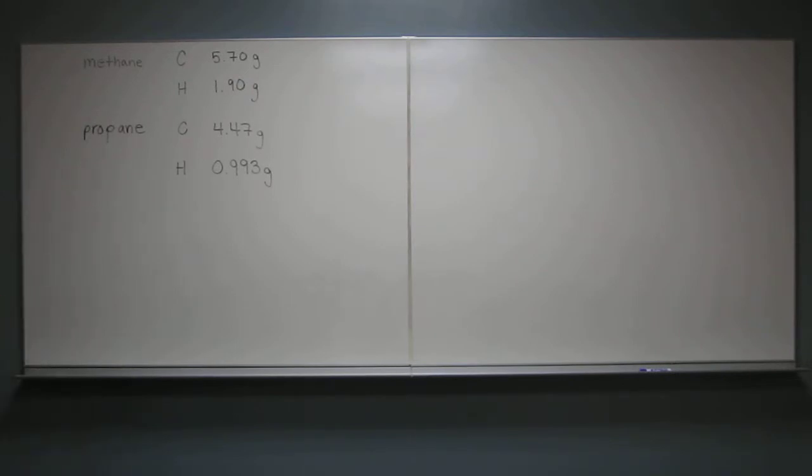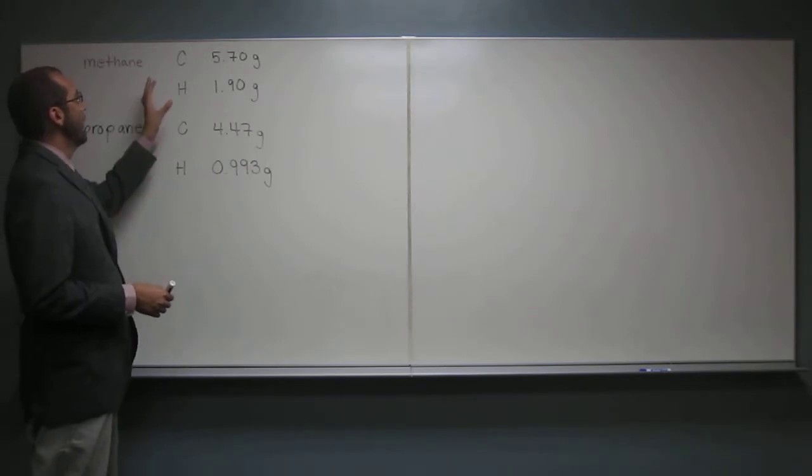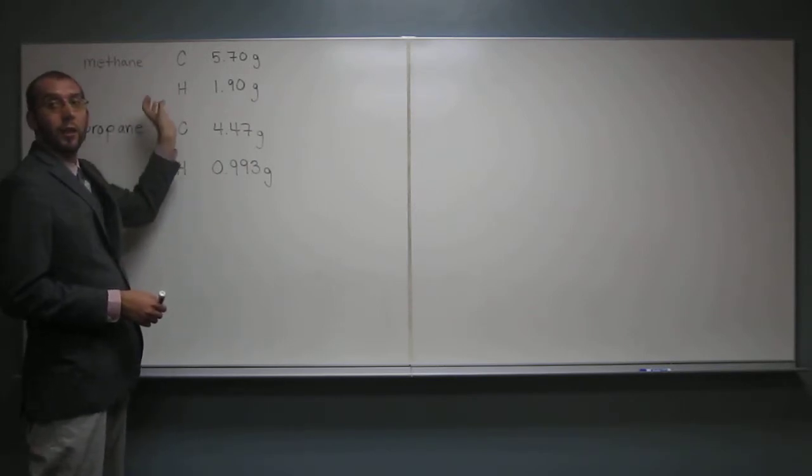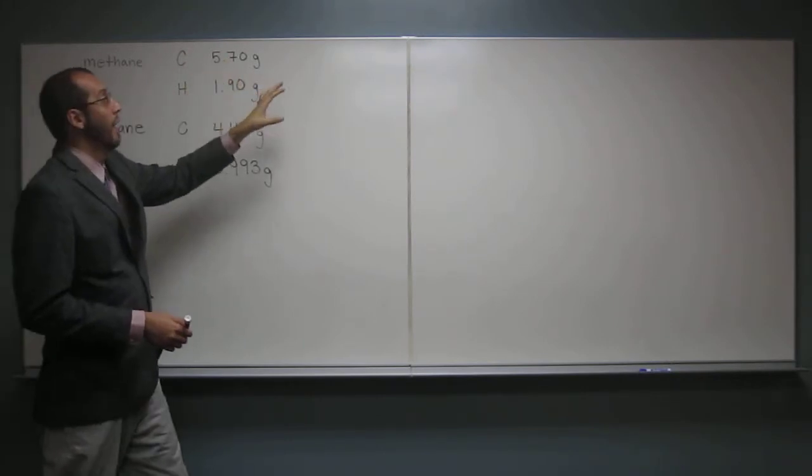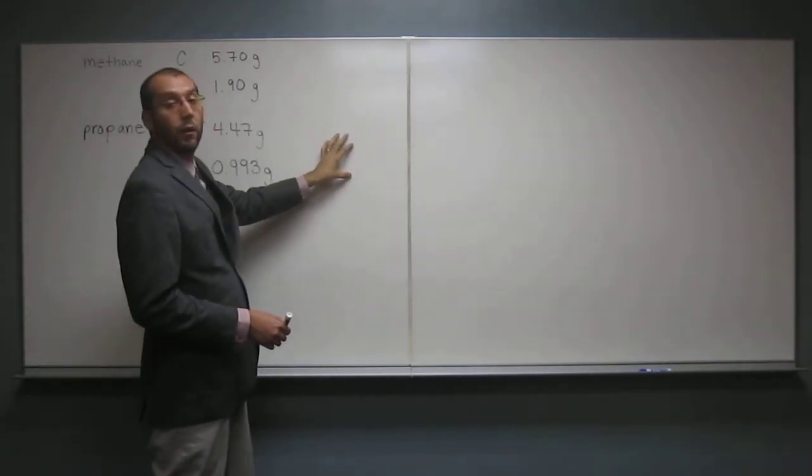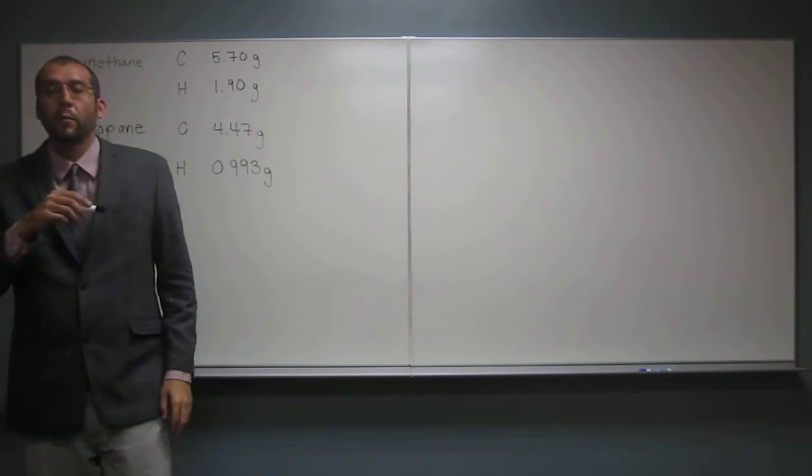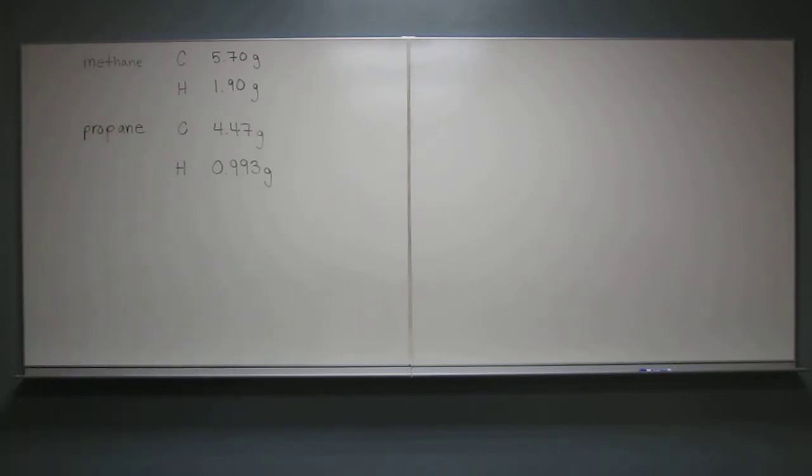So how does it work? What you want to do is take the ratio of the different elements in each one of the molecules, and then divide that number that you get by the number you get from the other one. And if those two numbers are simple whole numbers, then that obeys the law of multiple proportions. Does that make sense? Yeah, it does.